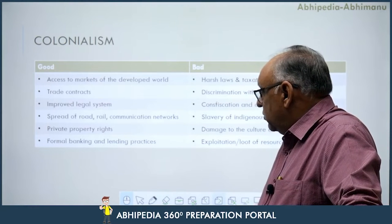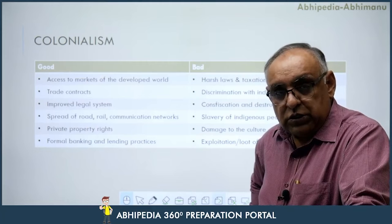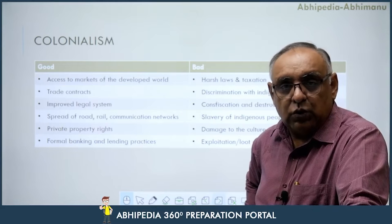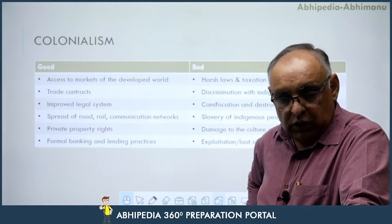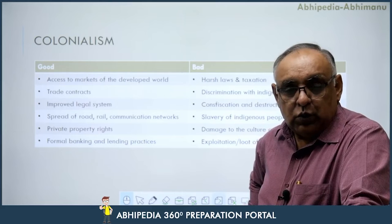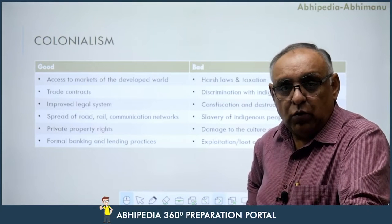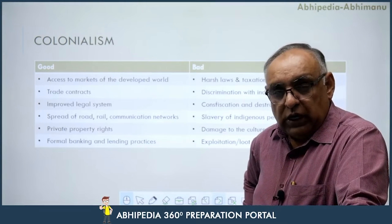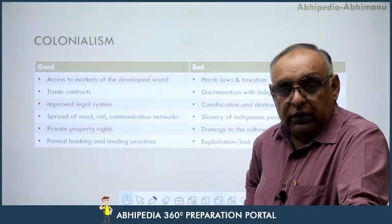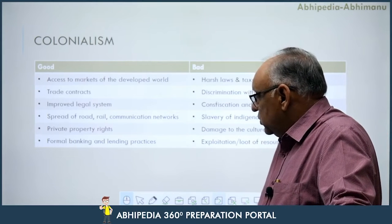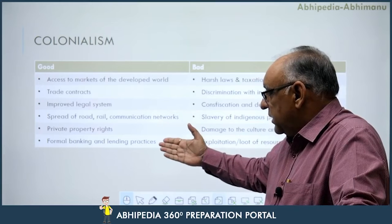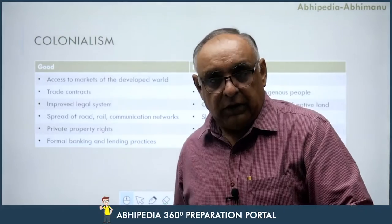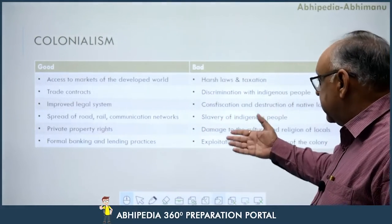Spread of road, rail, and communication networks — क्योंकि जो country किसी को अपनी colony बनाती है, उसका interest होता है maximum economic resources grab करना और economic exploitation करना, और उसके लिए उनको rail network, road network, और communication network develop करनी पड़ती है। It also gave private property rights, and informal banking and lending practices are also a gift of colonialism to third world countries.